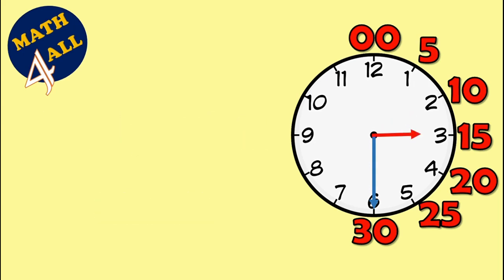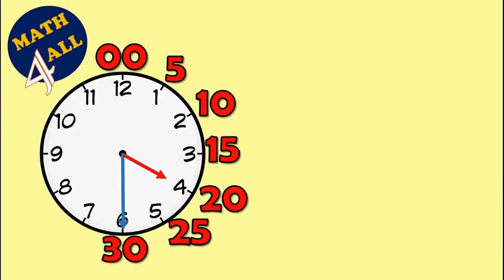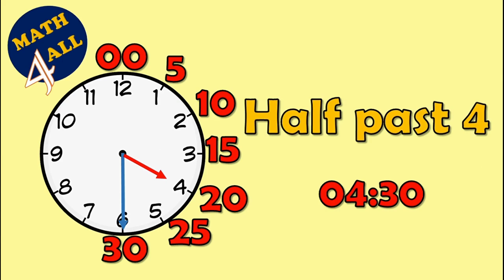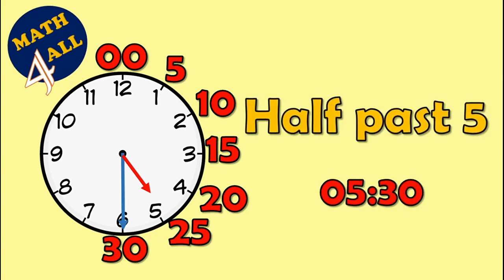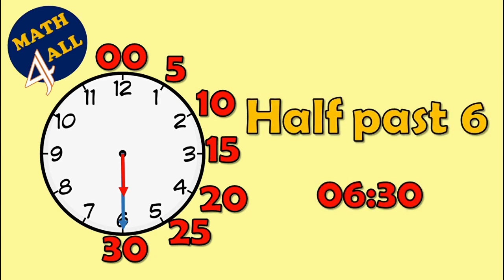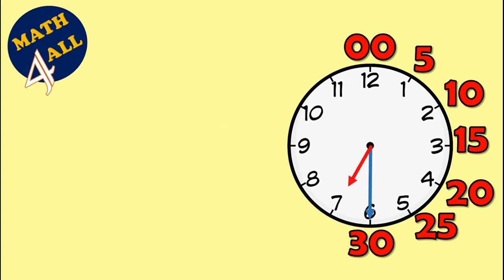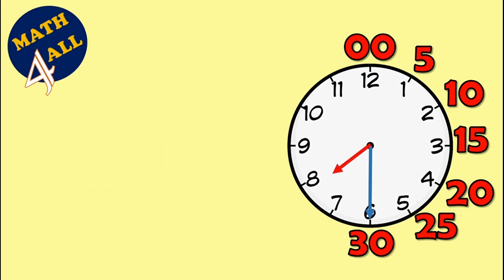What is the time? It's half past 3, or 3:30. What is the time? It's half past 4, or 4:30. What is the time? It's half past 5, or 5:30. What is the time? It's half past 6, or 6:30. What is the time? It's half past 7, or 7:30.